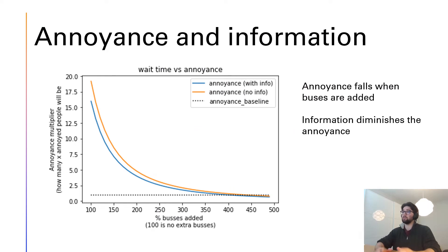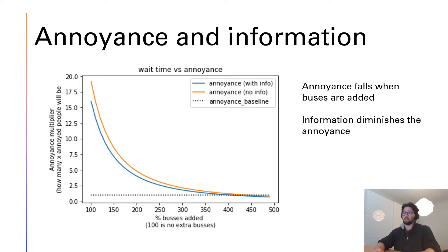The annoyance estimation compares scenarios with and without information. With info, the annoyance factor is lower, and adding buses will lower the dissatisfaction quite a lot. So with extra buses there is less wait time and less annoyance, and with information people are also less annoyed during this whole process.